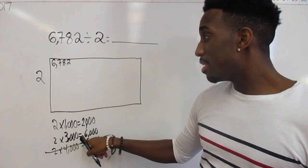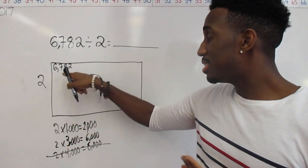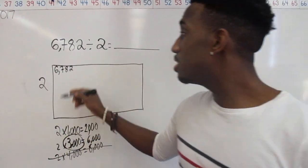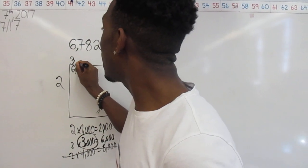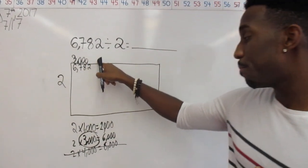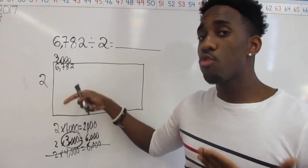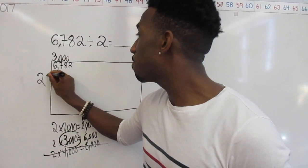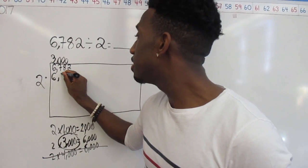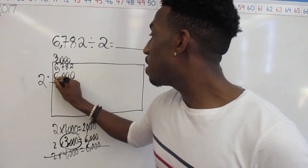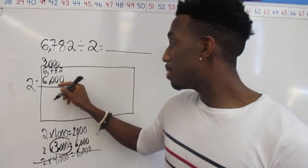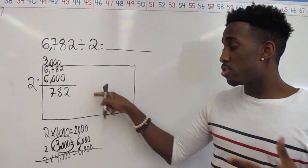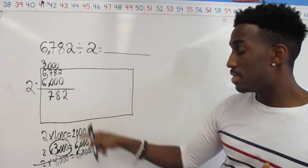I know that the closest I can get to 6,782 is if I use a side length of 3,000. So I'm going to take 3,000 and put it on top as a side length of the rectangle. Now I'm going to subtract what I used. 3,000 times 2 gives me 6,000, so I've used 6,000 of the area inside my rectangle. When I subtract, I have 782 left.